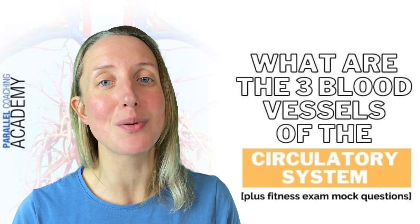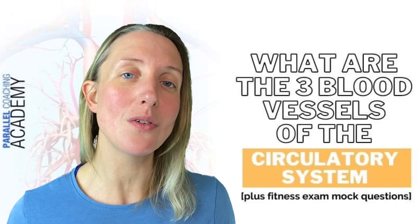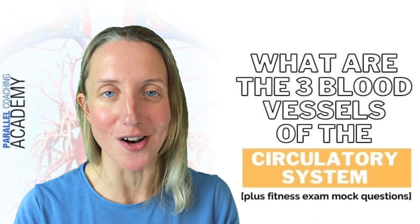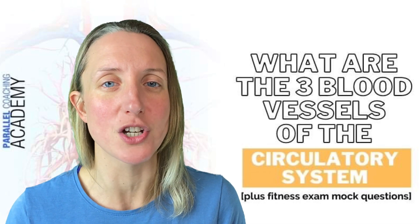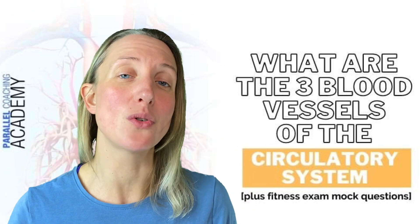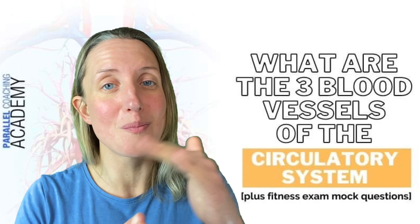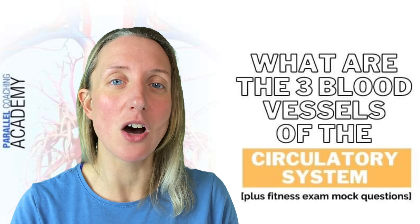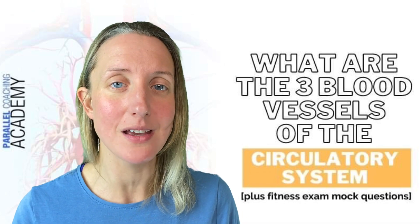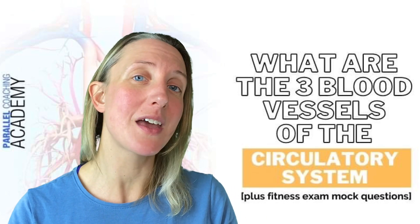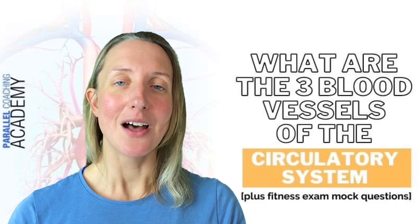Veins carry blood into the heart. A nice way to remember this: vein is spelled with 'I-N' at the end, and it's going in to the heart. Because veins carry blood back after its long journey around the body, the pressure is much lower. As a result, veins have thinner walls and little valves that create a one-way system so blood flows back to the heart. Veins mostly carry deoxygenated blood, but the pulmonary vein carries oxygenated blood — that's the one exception.